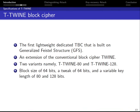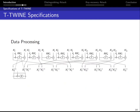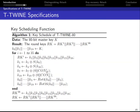Similar to TWINE, T-Twine has two variants: T-Twine-80 and T-Twine-128. These two variants use the same block size of 64 bits, tweak of 64 bits, and a variable key length of 80 or 128 bits. T-Twine consists of three parts. The first is the round function, which consists of eight type-2 generalized Feistel structures followed by a shuffle operation of 16 nibbles. The second part is the key schedule — T-Twine uses the same key schedule as TWINE.